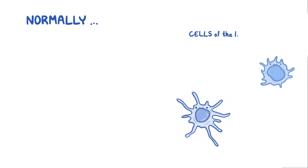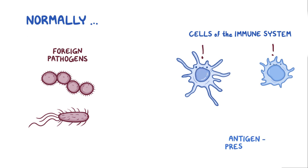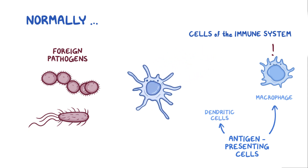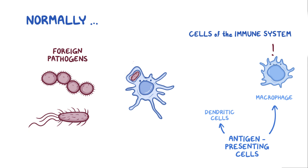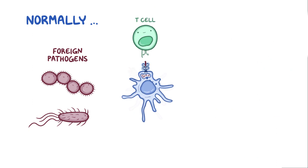Normally, the cells of the immune system are ready to spot and destroy anything foreign that could cause the body harm. Immune cells called antigen-presenting cells, which include macrophages and dendritic cells, latch onto pathogens and engulf them, literally swallowing them up. Pieces of the pathogen called antigens are then presented on a major histocompatibility complex class 2 molecule, or MHC class 2 molecule, which is like a serving platter for antigens. An antigen-presenting cell then searches for a T cell that can bind to the antigen.